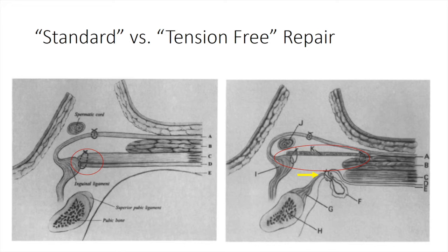The key difference in the standard repair on the left and the tension-free repair on the right is the use of a mesh implant to bridge the shelving edge of the inguinal ligament to the conjoined internal oblique and transversus abdominis tendons, removing the need for direct approximation of these naturally separated structures, a maneuver that inevitably produces tension.